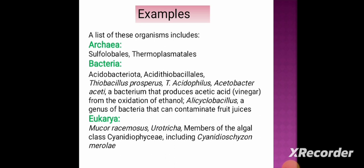Acetobacter aceti is most important because this bacterium produces acetic acid — that is vinegar — from the oxidation of ethanol. Another important acidophile is Alicyclobacillus, a genus of bacteria that can contaminate fruit juice.